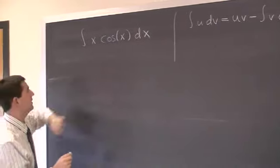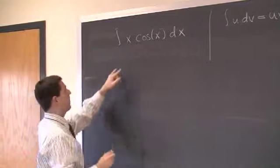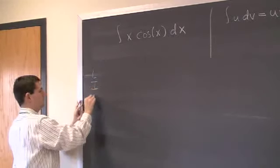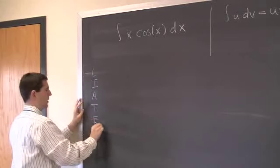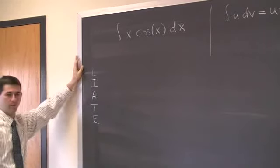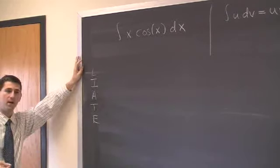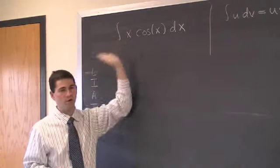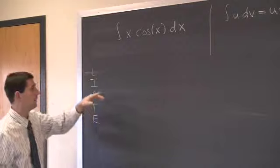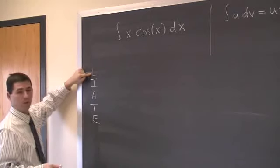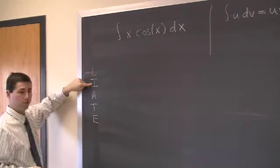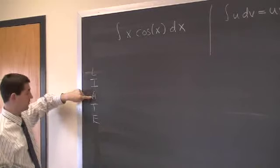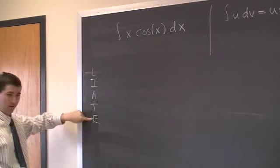Let's give it a shot here. We had this nice little mnemonic: Lions in Africa tackle elephants — hopefully somebody will come up with a better one. This told us which one we should choose as our u and which one should go into the dv. L meant logarithmic functions, I was inverse trig, A was algebraic — meaning polynomials and rational functions — T was trig, and E was exponential.